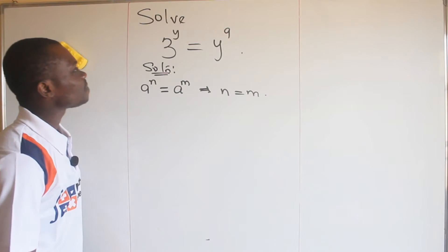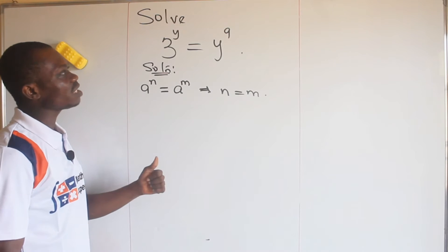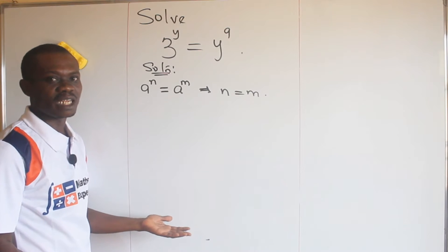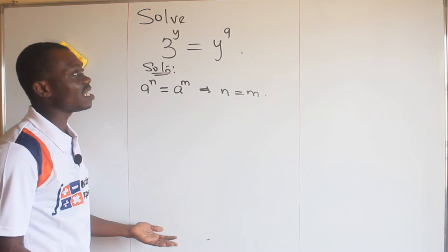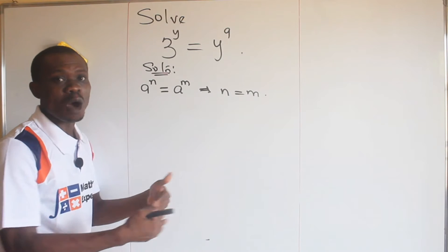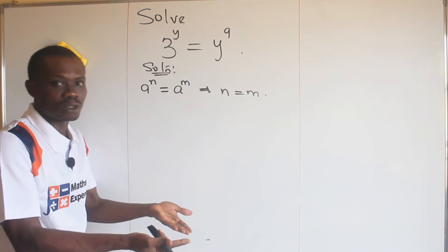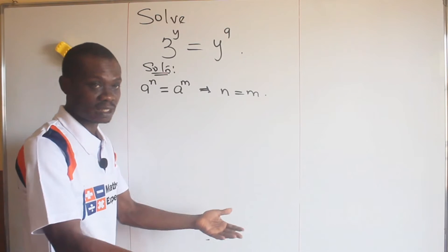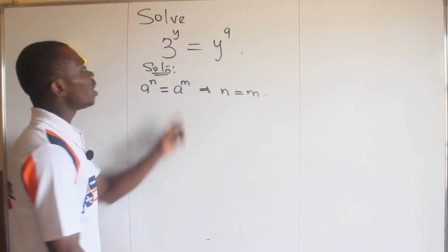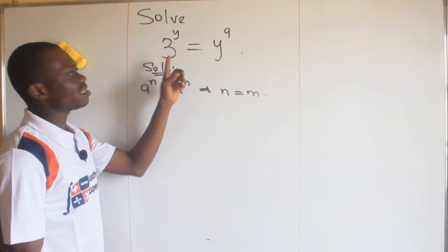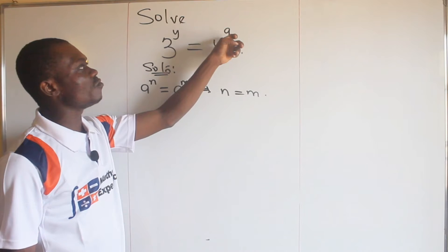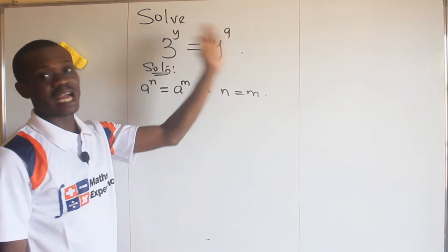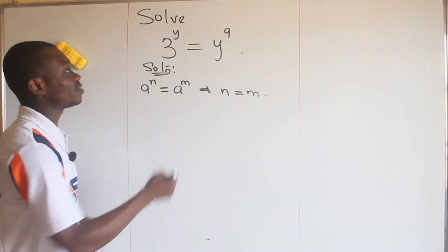Now what are we going to do? The first thing, as I usually tell my students, is to try to do what you know how to do and see how that helps. At least I can try to move the numbers to one side and the alphabets to another side.